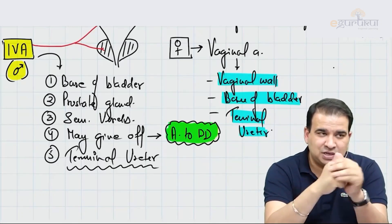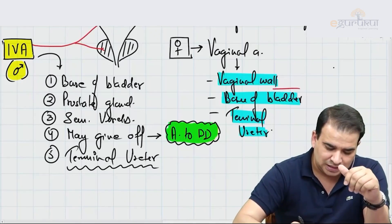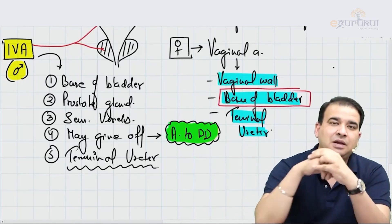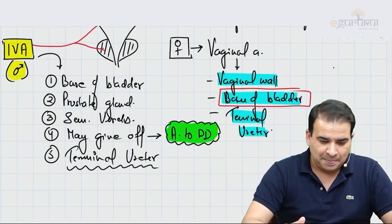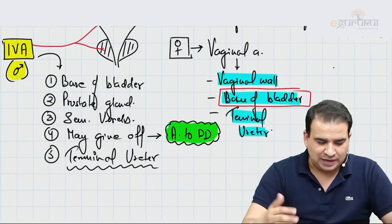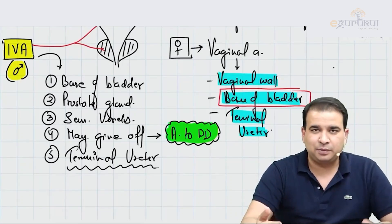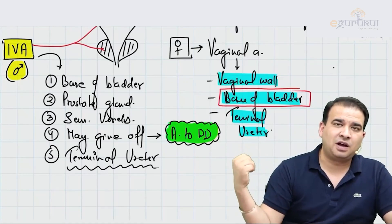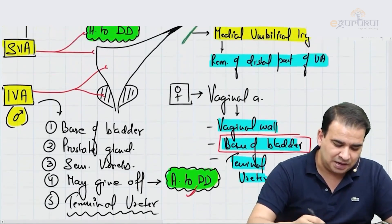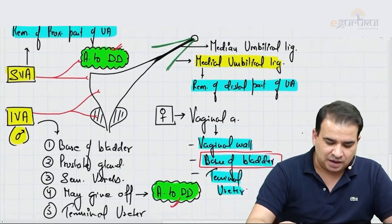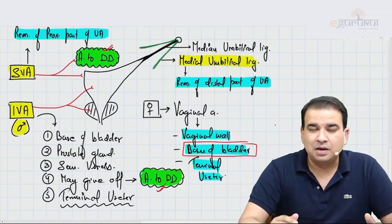To summarize: the aorta divides at L4 into common iliac arteries, which divide at L5 into internal and external iliac. The internal iliac divides into posterior and anterior divisions. Key exam points include the branches of each division, the vesicular arteries, and the artery to ductus deferens arising mainly from the superior vesicular artery.